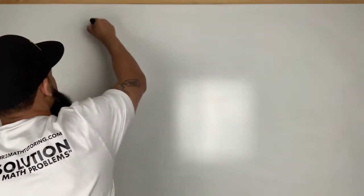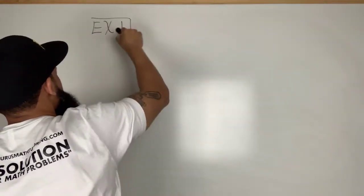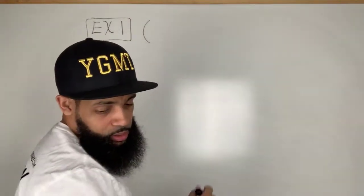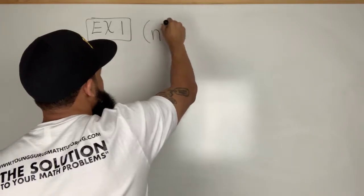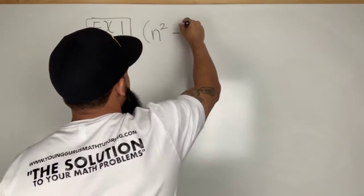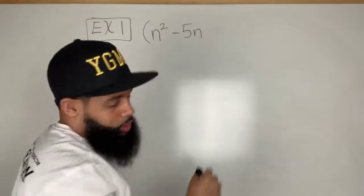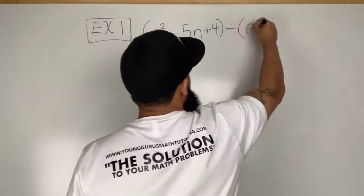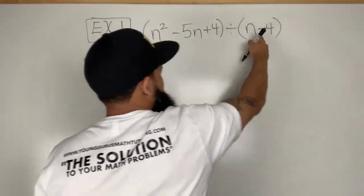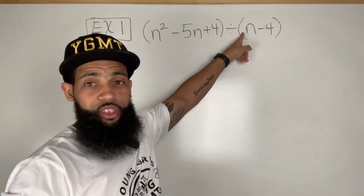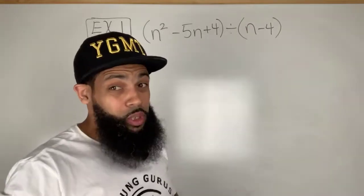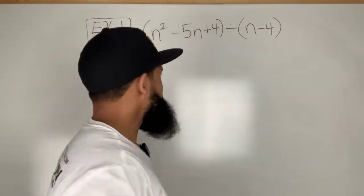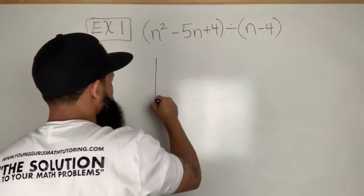Let's get right into the examples. Example one. Now in these examples, this method only works when you have a divisor with a leading coefficient of one. I'm going to show you what I mean by that. Notice my divisor right here has a leading coefficient of one. Synthetic division only works if that leading coefficient is one.